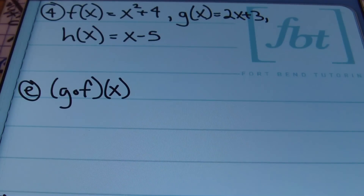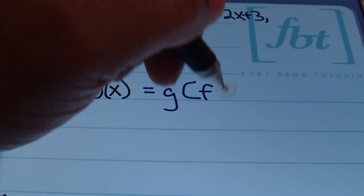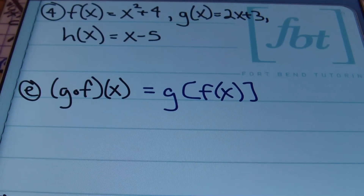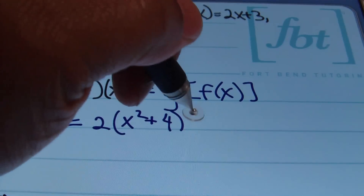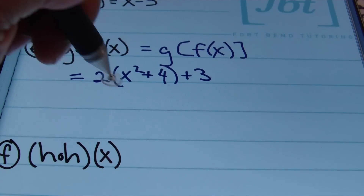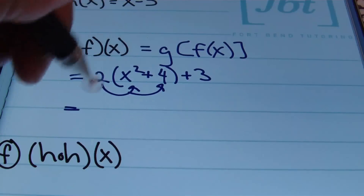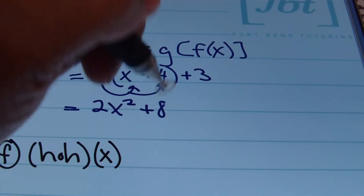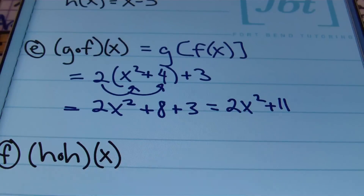In part E, they want us to find G composite F of X, meaning G of F of X. We plug the entire F function into G. That gives us 2 times the F function, which is X squared plus 4, then the rest of G, which is plus 3. After distributing, this becomes 2X squared plus 8 plus 3. Combining like terms results in 2X squared plus 11, which is the answer.